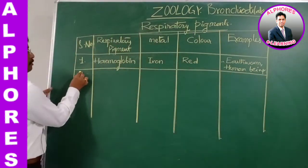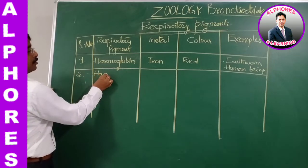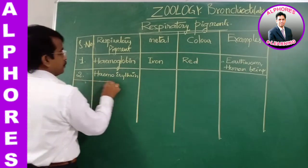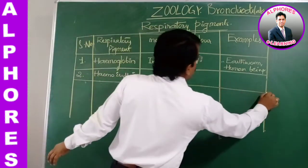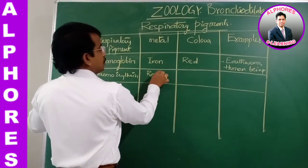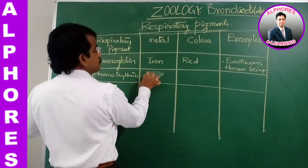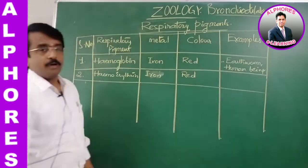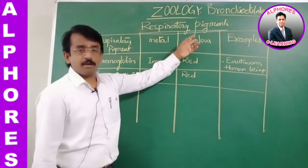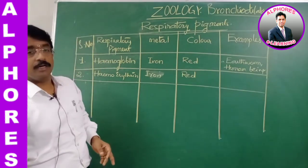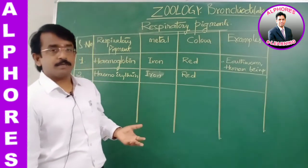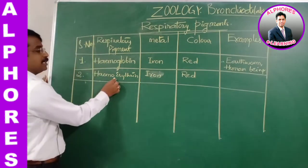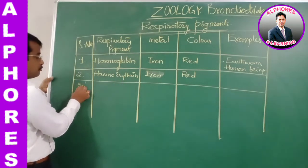Hemoerythrin is also a respiratory pigment that is red colored and also contains iron as its metal. It is seen in certain annelids as well as certain arthropods.